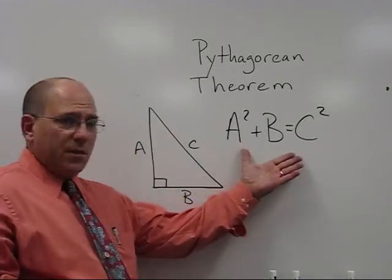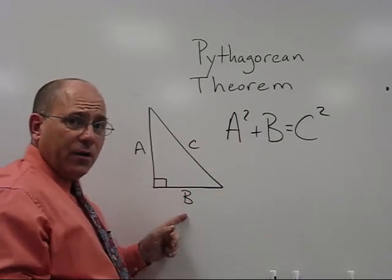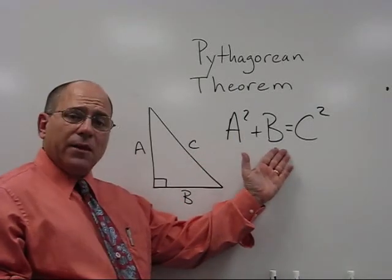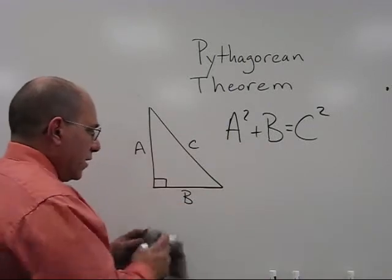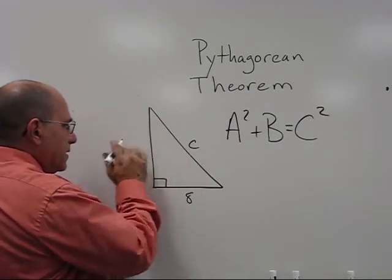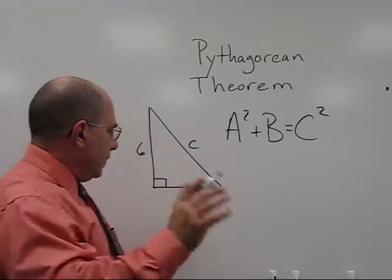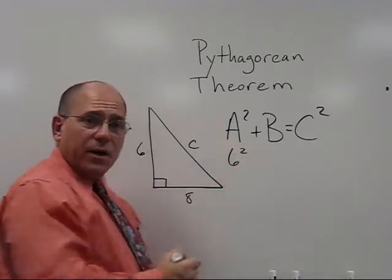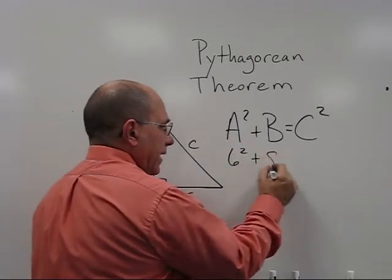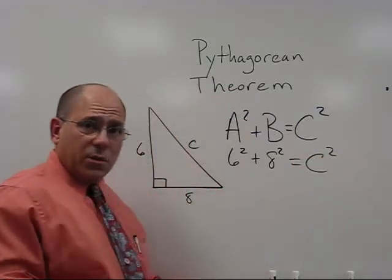If we have numbers, we take them and plug them in, then solve. Let's go ahead and do that. If this is eight and this is six - those of you who know this already know this one is going to work out. We take the six and put it here: six squared plus eight squared equals C squared.